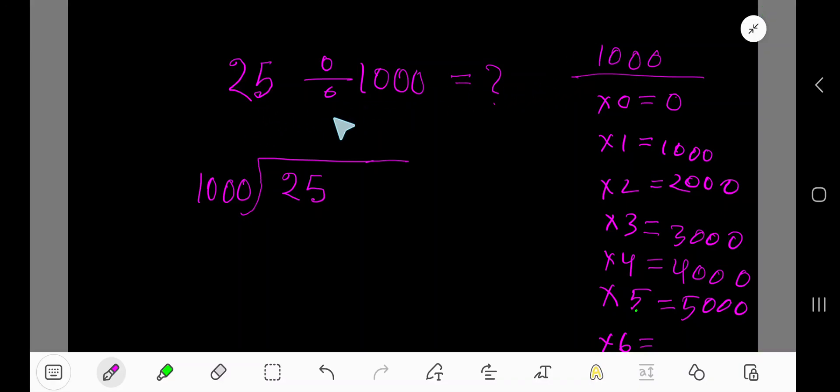25 divided by 1000. 1000 goes into 25 how many times? 0 times, as 25 is less than 1000. 0 times 1000 means 0. If you subtract, then you will get 25 again.